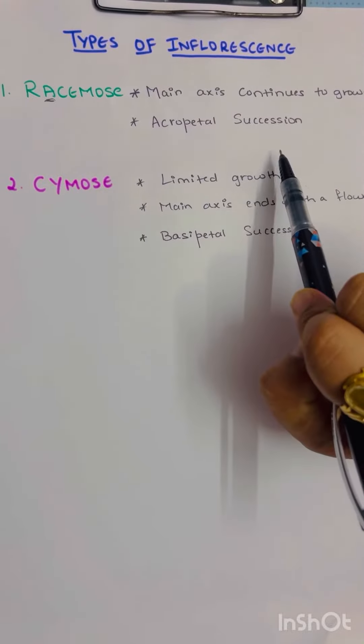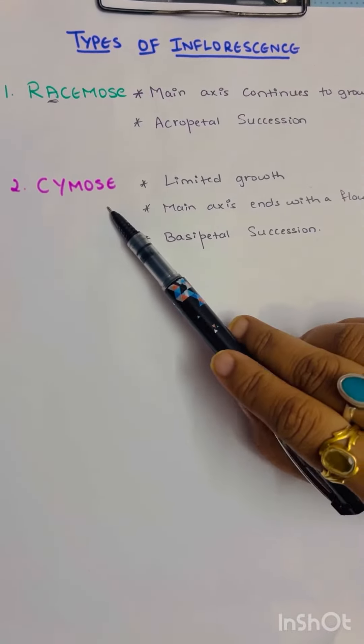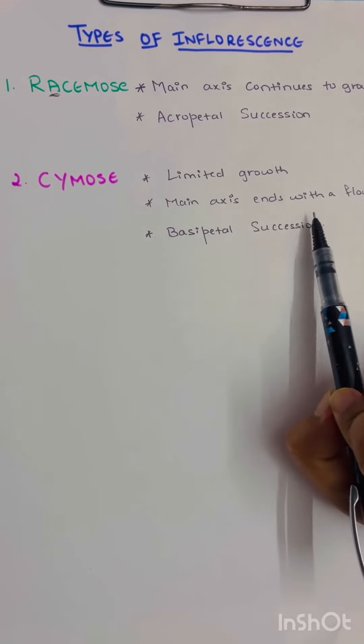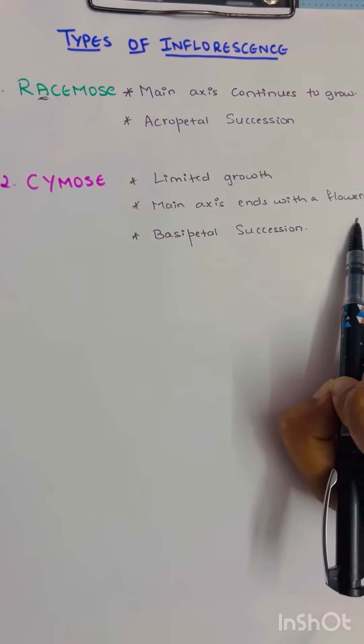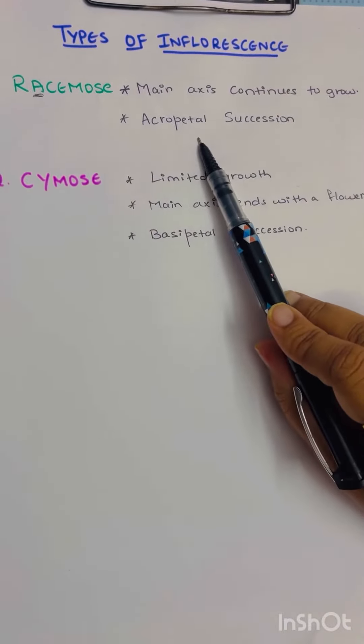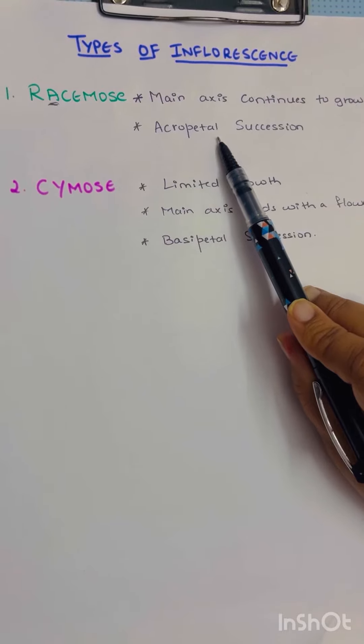In cymose inflorescence, there is limited growth. It means that the main axis ends with a flower and it has basipetal succession. Acropetal means the younger flowers are at the tip and the older flowers are at the base.